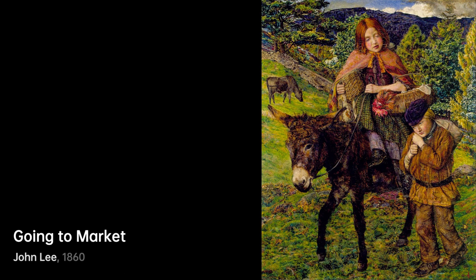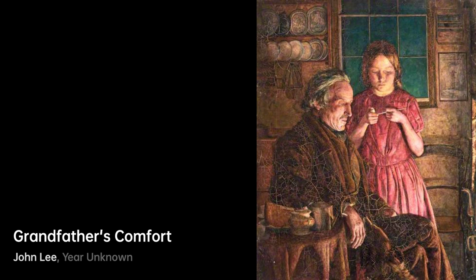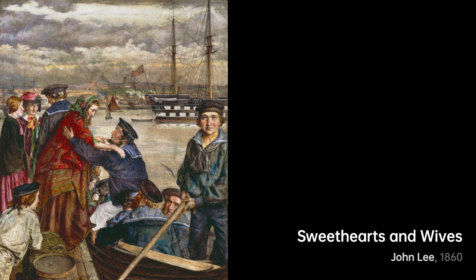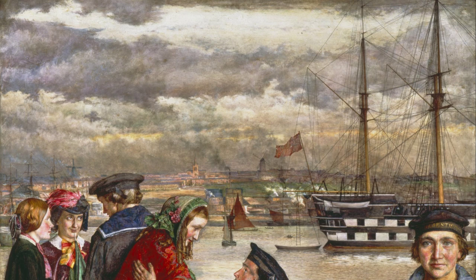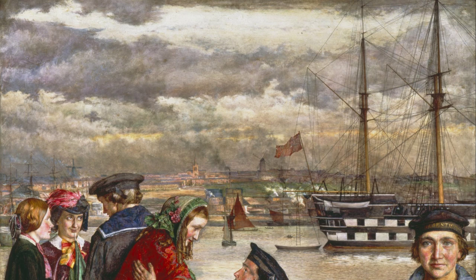In conclusion, John Lee was a British painter who made a significant contribution to the Romanticism art movement. His gritty depictions of working-class life in 19th-century Liverpool were highly realistic. Lee's perseverance paid off when he produced his most famous work, Sweethearts and Wives, which remains a quintessential example of the dockside genre. While he struggled to gain recognition in his lifetime, Lee's influence on British genre painting is still felt today, and his commitment to depicting the lives of working-class people on canvas remains an important part of his legacy.